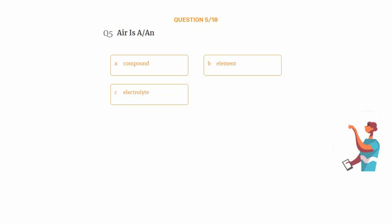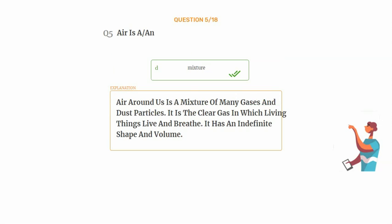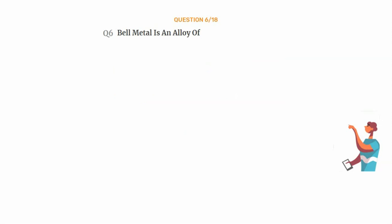Question number five: air is — option A: a compound, option B: an element, option C: an electrolyte, option D: a mixture. The correct answer is option D: mixture. Air around us is a mixture of many gases and dust particles. It is the clear gas in which living things live and breathe, and it has an indefinite shape and volume.